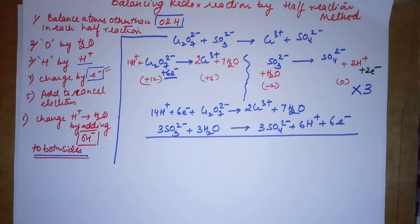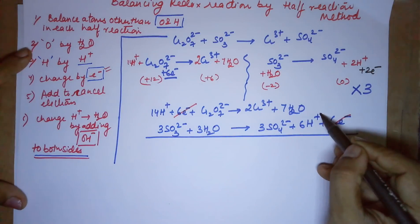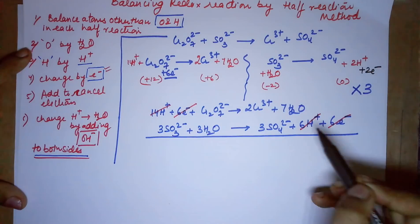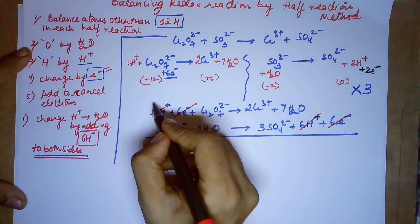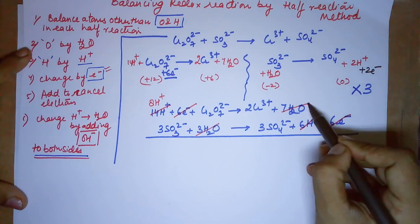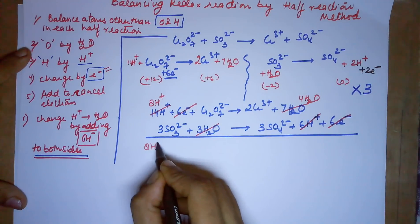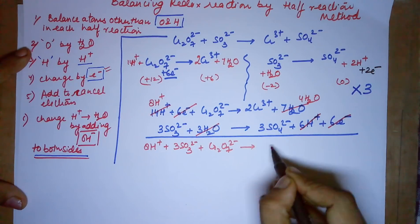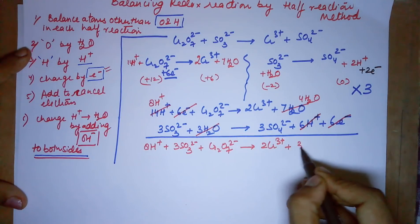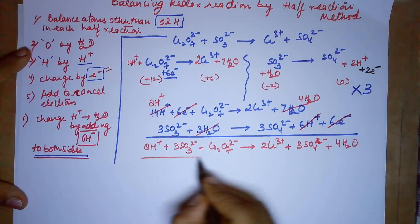Adding the two half reactions: 6 electrons cancel on each side. From the 14 H⁺ on the left minus the 6 H⁺ on the right, 8 H⁺ remain on the left. The 3 water molecules on the left and 7 water molecules on the right — cancelling 3 — leaves 4 water molecules on the right. The final net equation is: 8H⁺ + 3SO₃²⁻ + Cr₂O₇²⁻ → 2Cr³⁺ + 3SO₄²⁻ + 4H₂O.